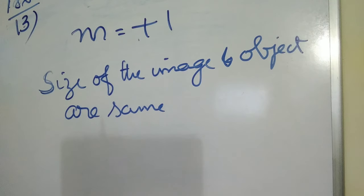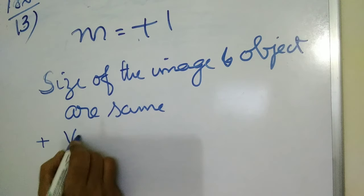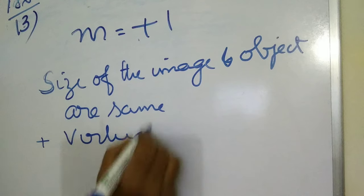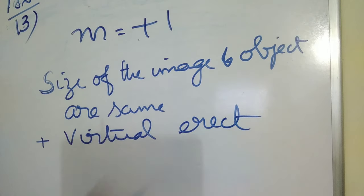If it is less than 1, diminished. More than 1, enlarged. What does this plus sign indicate? Plus stands for virtual, erect. That is the meaning. That is, plane mirror forms a virtual erect image of same size. That is the indication or meaning of this statement.